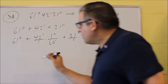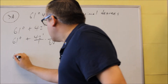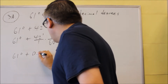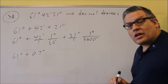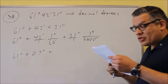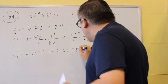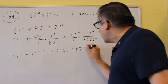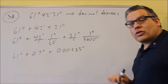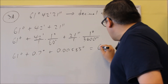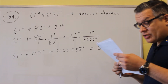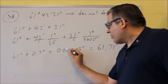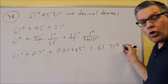We're going to now just do the calculation, and it says round to 2 decimal places. So we have 61 degrees plus 42 divided by 60, and when you do that you get 0.7 degrees. Next, we do 21 divided by 3,600, and this one is 0.00583 with more decimals after it. Now adding all this together and rounding to 2 decimal places, we get 61.71 degrees. The 0.005 gives us 0.7 and then with the 5 afterwards that rounds up to 1 in the second decimal place.